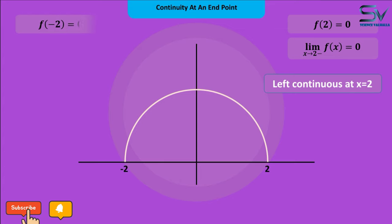The value of the function at x equals minus 2 is 0. And at this point we can only find the right limit. And the right limit is 0 at this point. So it is right continuous at x equals minus 2.